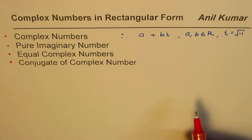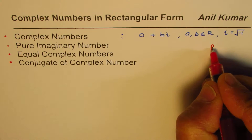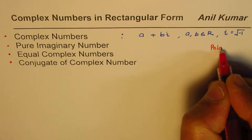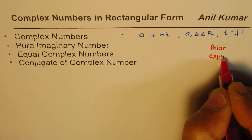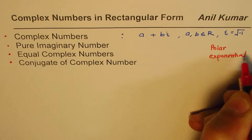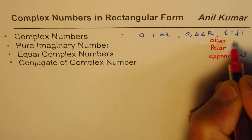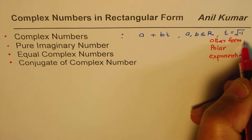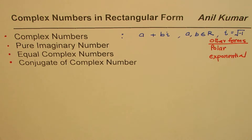There are other forms of complex numbers which we are not considering now — those could be written as polar form or exponential form. We'll talk about them in a separate video.